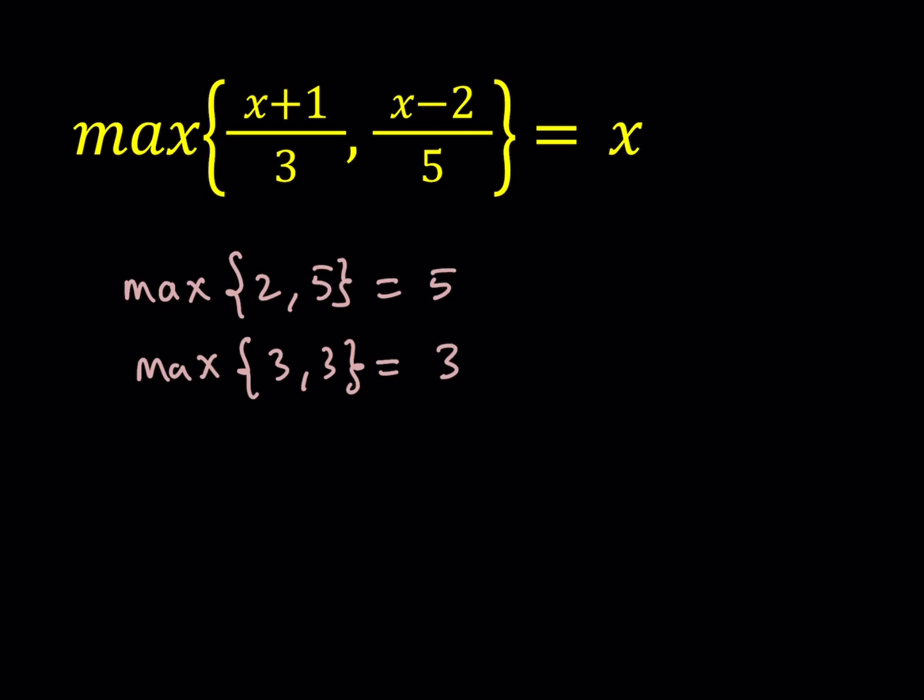Having said that, let's go ahead and dive into this problem. Now, we are given that the max of x plus 1 over 3 and x minus 2 over 5 is equal to x, and we're supposed to solve for x. So how do we go about solving these kinds of problems? We first compare these two quantities. We don't know which one is greater, so we're going to do this case by case.